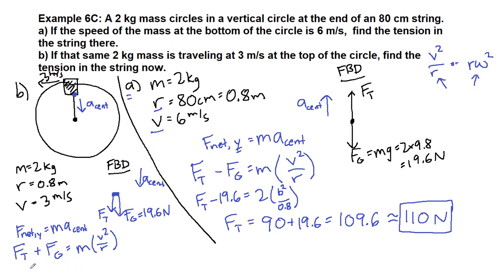All right, so tension here, kind of near the bottom of the screen, tension is equal to 2 times 3 squared over 0.8 minus the 19.6. And now we have a very small number here. We have 22.5 minus 19.6 which gives us a total of 2.9 newtons.